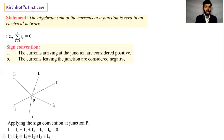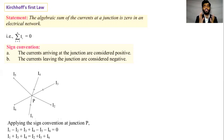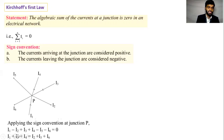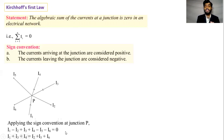What happens to I2, I5, and I6? They are running away from the junction. The currents leaving the junction are assigned a negative sign. When we do the algebraic sum of currents applying the sign convention, the total current is equal to zero.